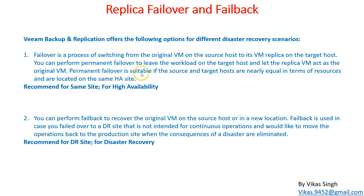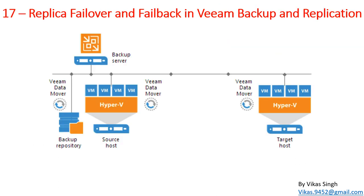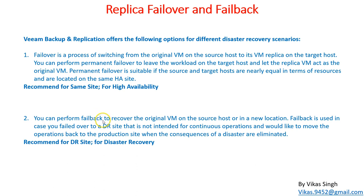Permanent failover is acceptable if the resources on the target host are nearly equal and they are located in the same site. This is recommended for the same site for high availability. You can also perform a failback to recover the original VM on the source host or in a new location. Failover to the DR site is not intended for continuous operation — you would move operations back to the production site once the consequences of the disaster are eliminated.